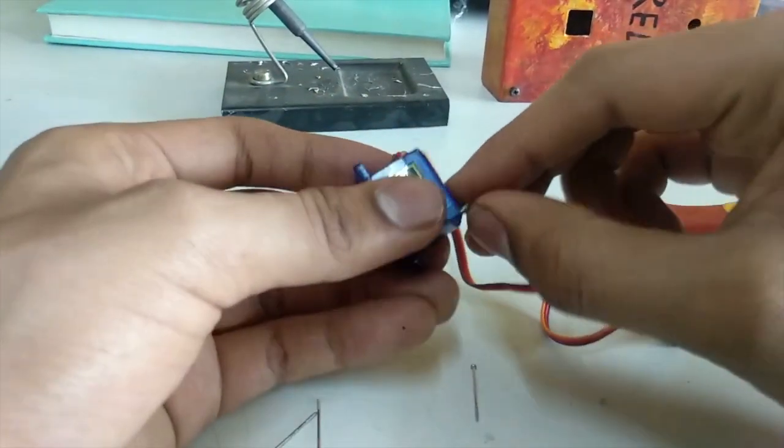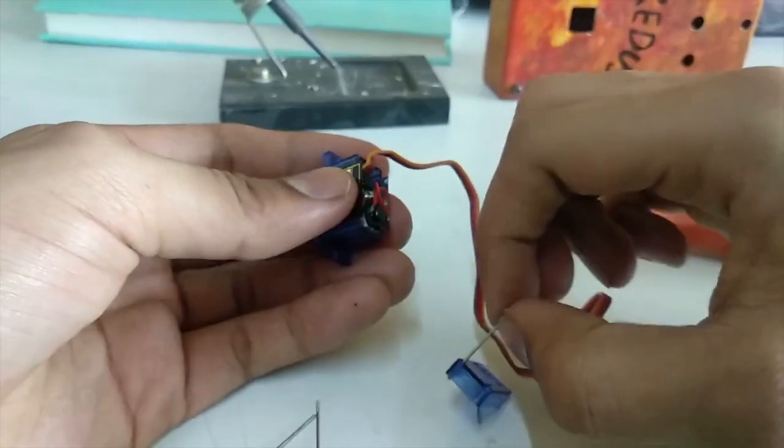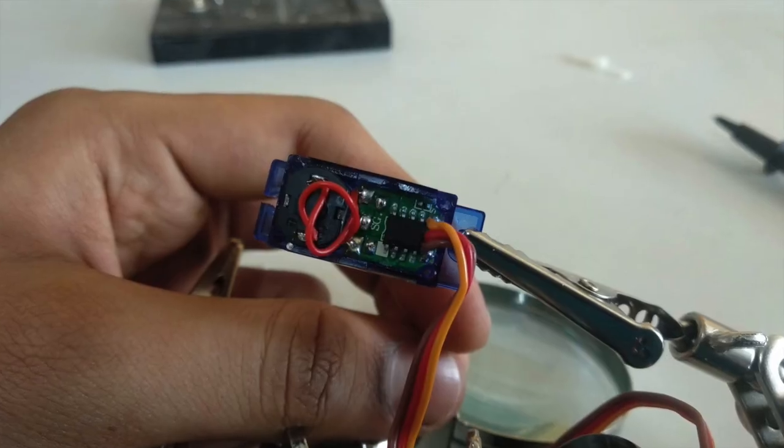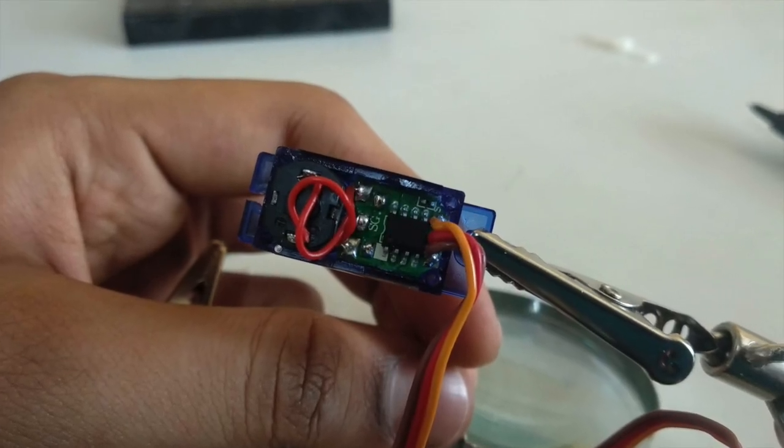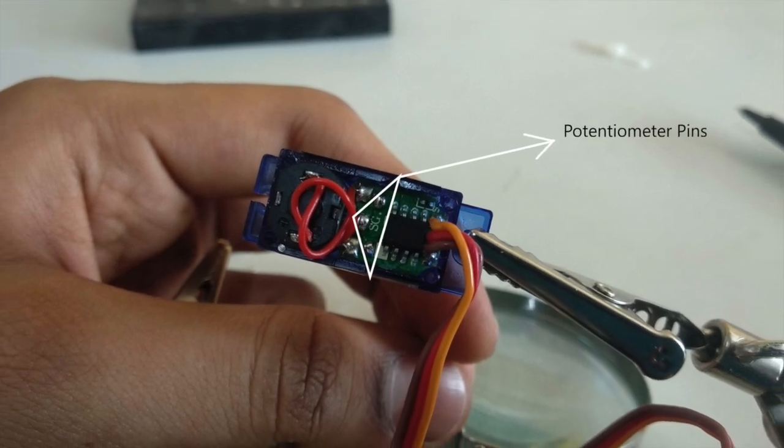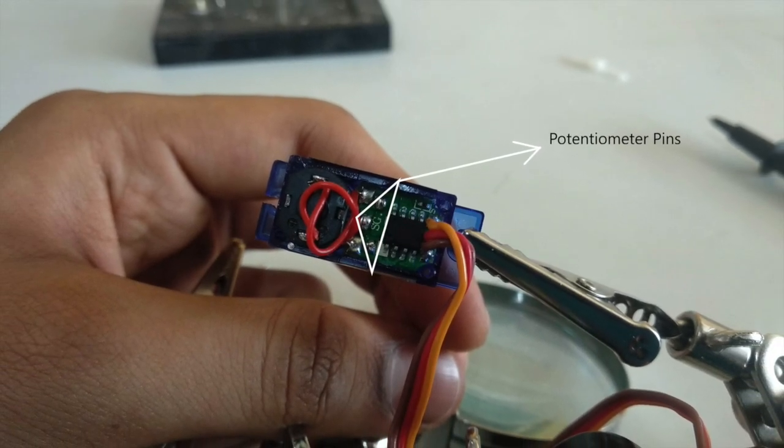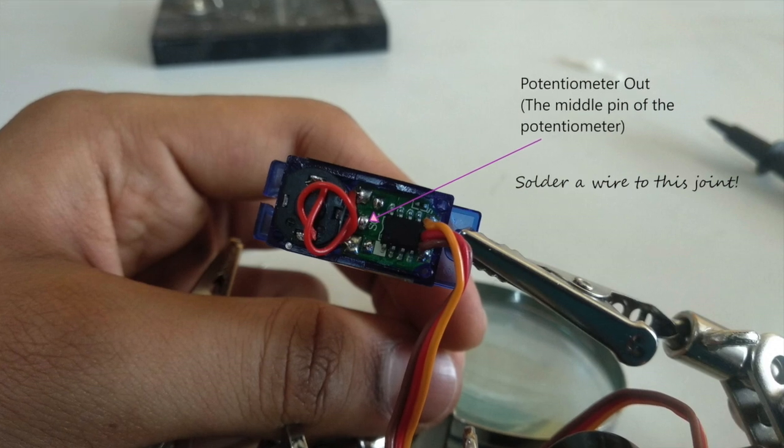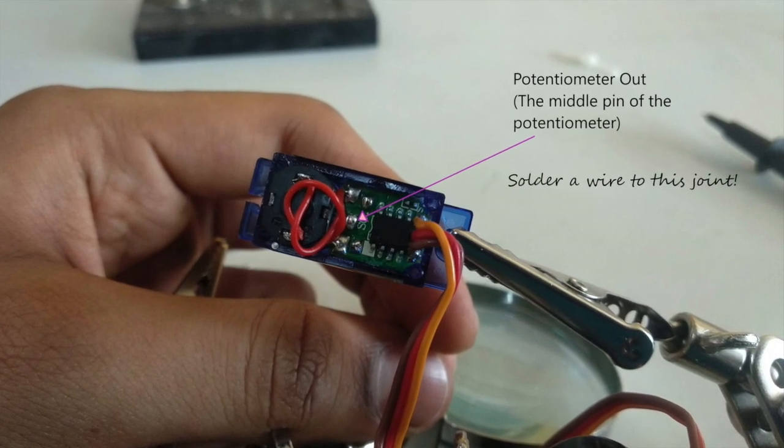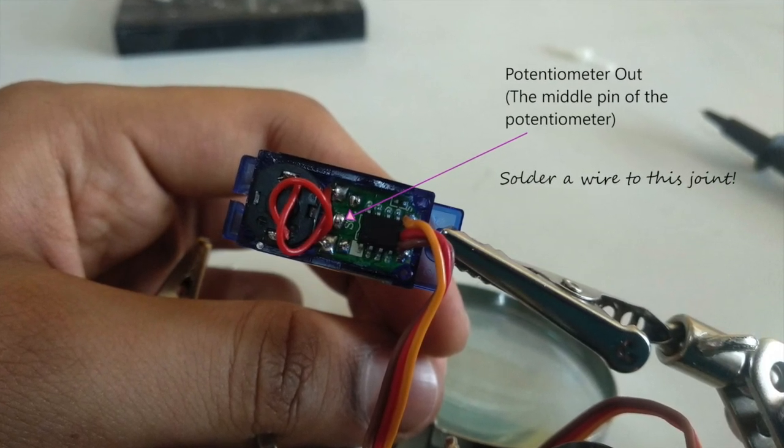To do this, we need to first open the servo's back cover and then look for three pins in a row on the control PCB. These three pins would most likely belong to the servo's potentiometer, and of the three pins, the one that we need to use is the center pin of the potentiometer.